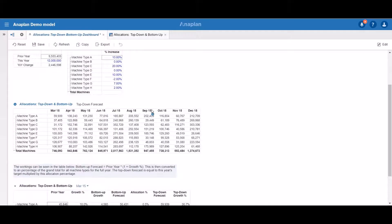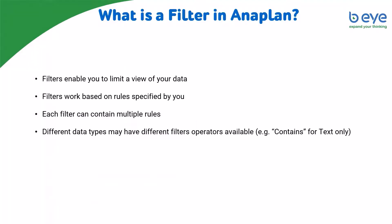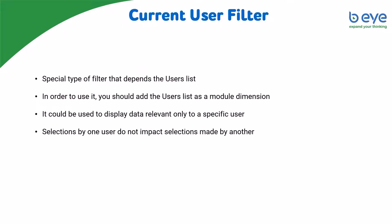This was a very simple filter in Anaplan. Now let's try and see something a bit more complex. Let's talk about the current user filter in Anaplan. This is a special type of filter that depends on the users list. In Anaplan you have the users list by default, and in order to use this type of filtration, you should add that list as a module dimension. This type of filtration could be used to display data relevant only to a specific user, making a dashboard much more clear and manageable. If any selections are to be made by your users, those by one user are not going to impact the selections made by another user.